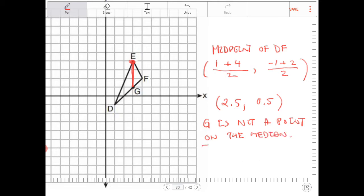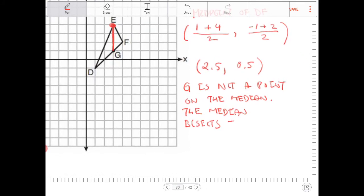The median bisects the opposite side. Point G does not.